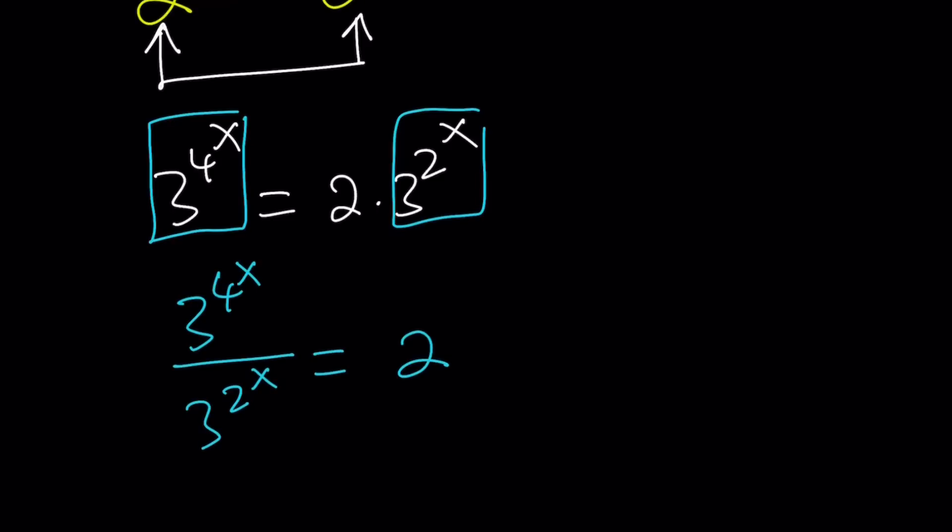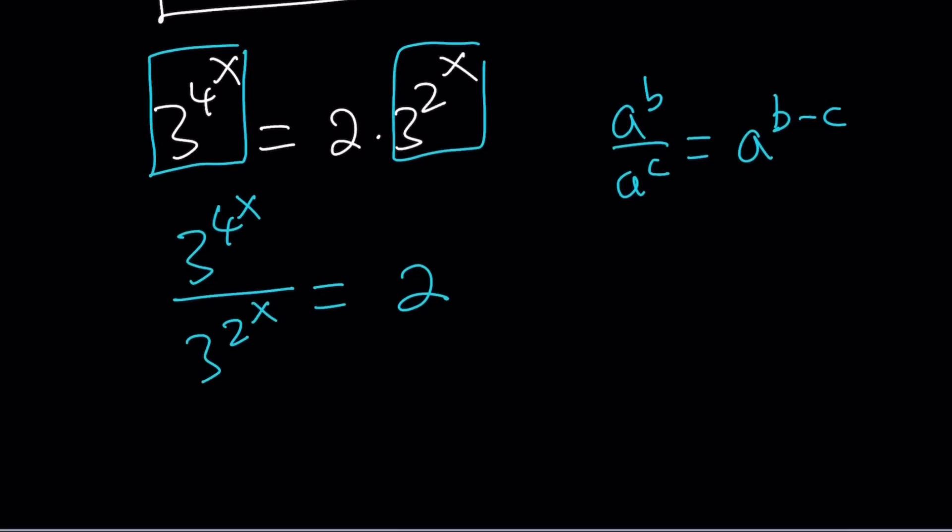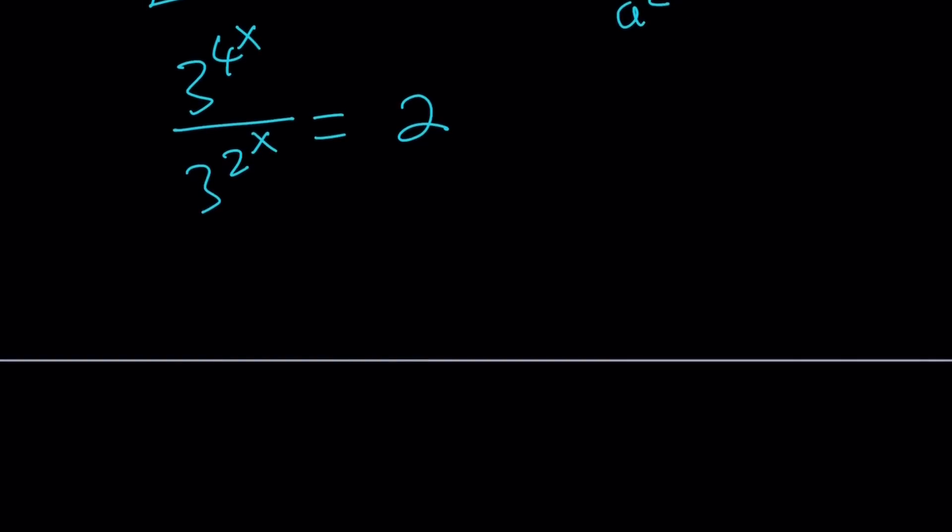Awesome. Now we're dividing two powers with the same base and the rule applies. If we're dividing a^b by a^c then that is a^(b-c) as long as a does not equal 0. So now we're going to subtract the exponents: 3^(4^x - 2^x) = 2. So far so good. We simplified the problem a great deal but we still got some work to do.